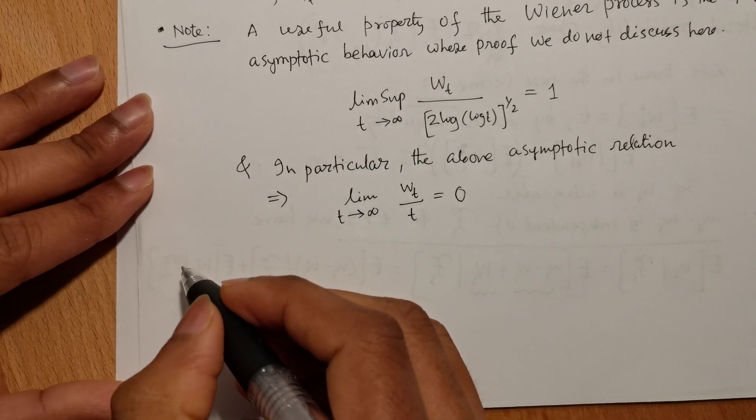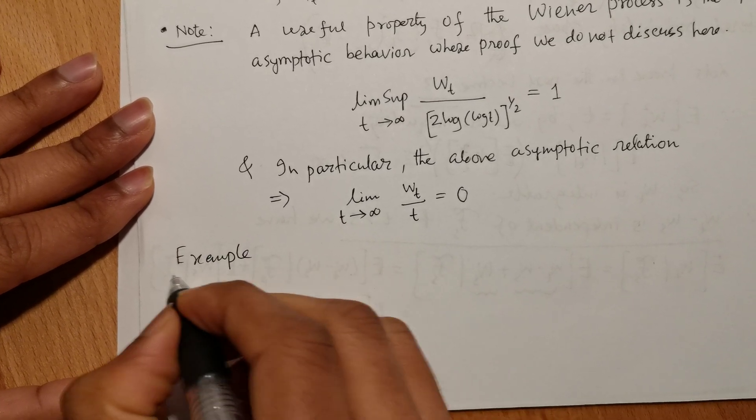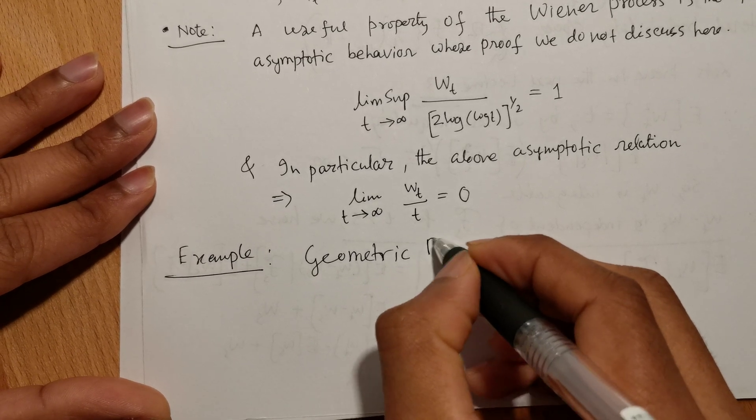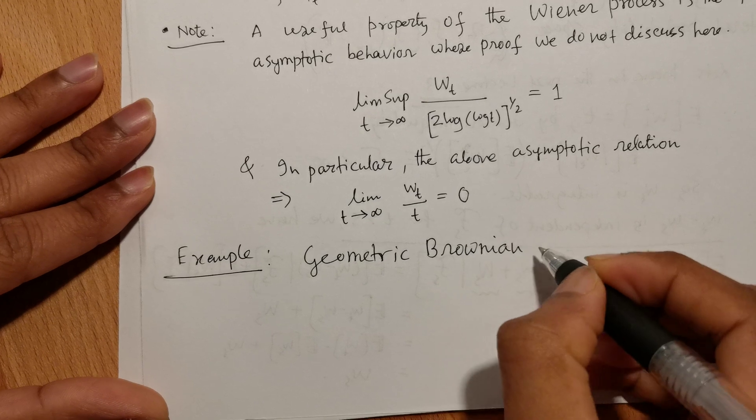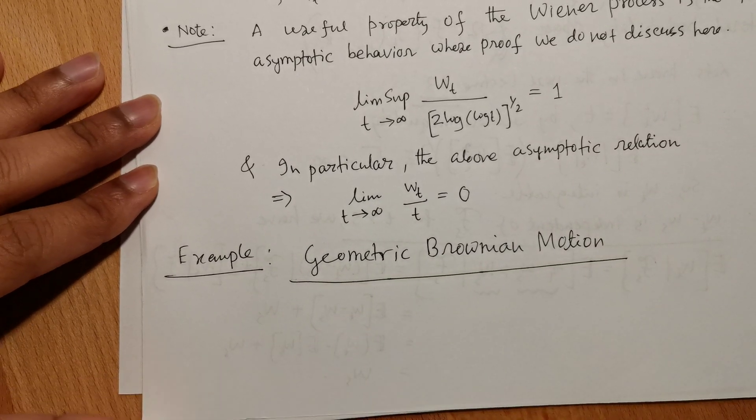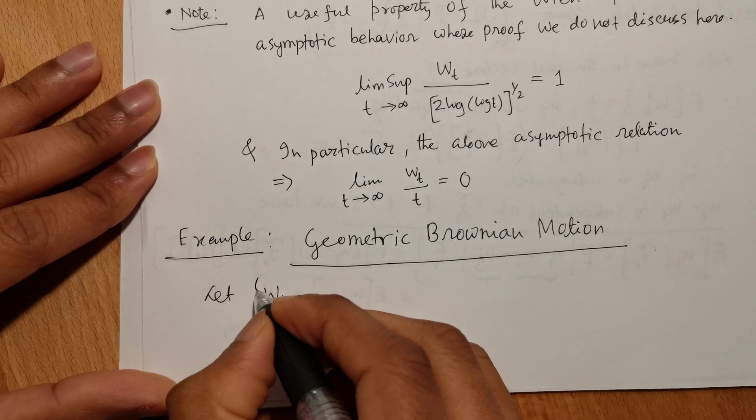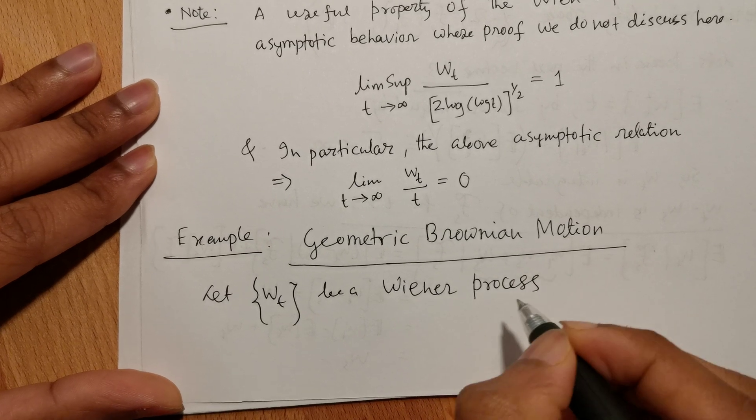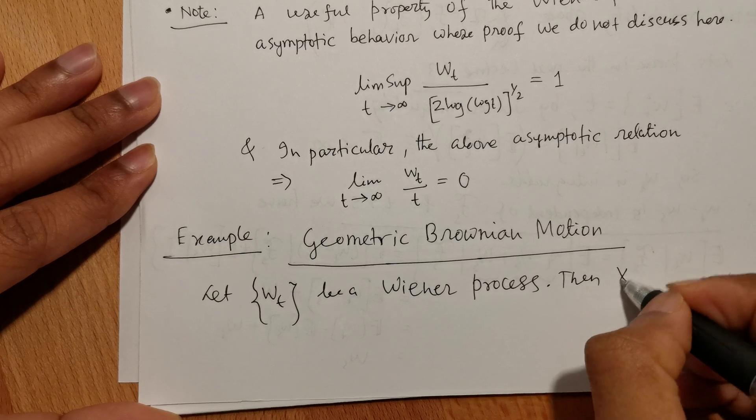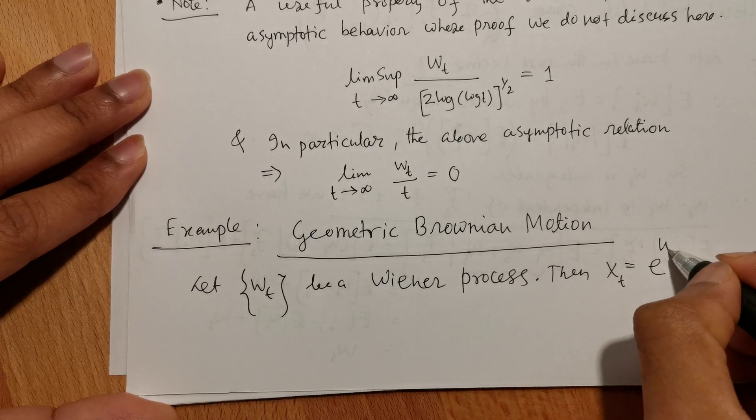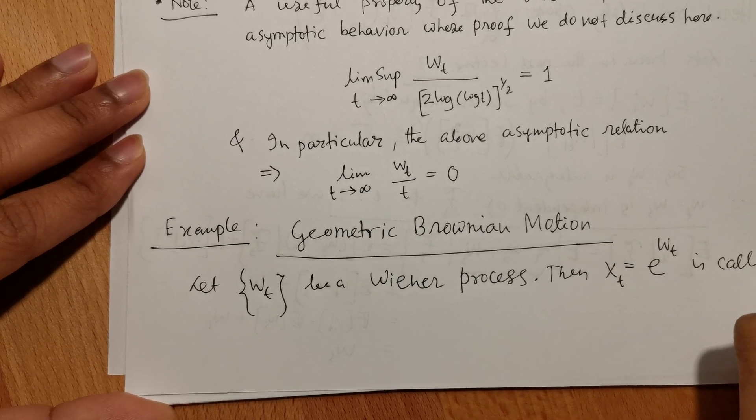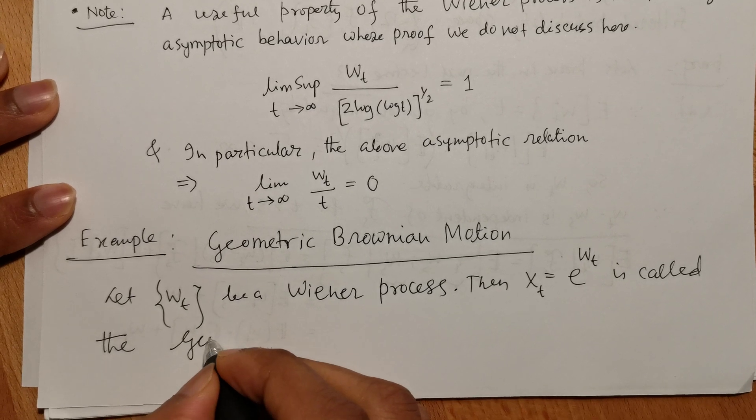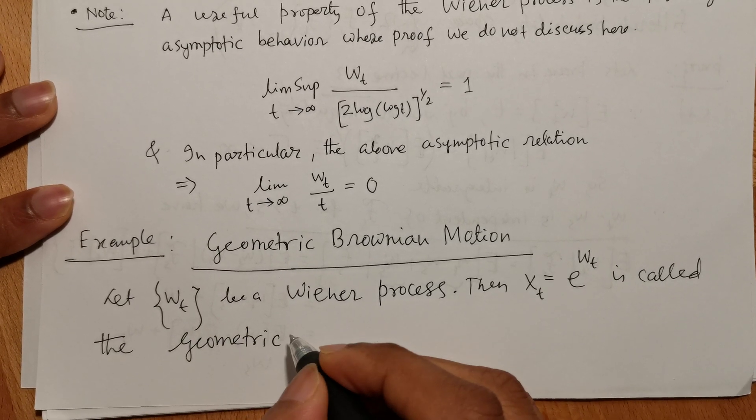Now there is a definition. There is something called geometric Brownian motion. Let Wt be a Wiener process. Then Xt = e^Wt is called the geometric Brownian motion.